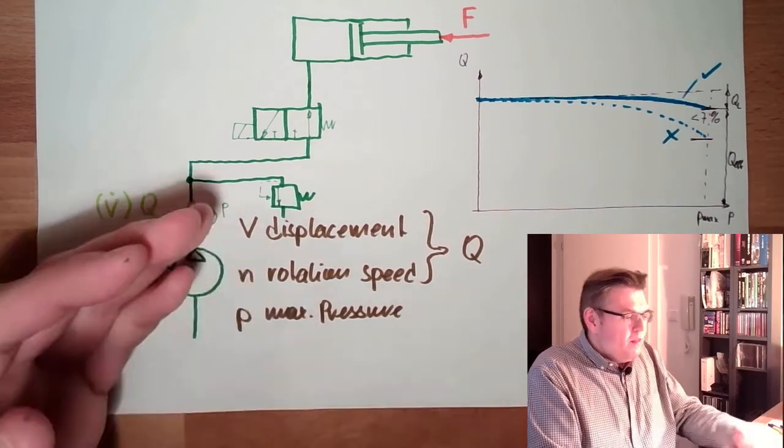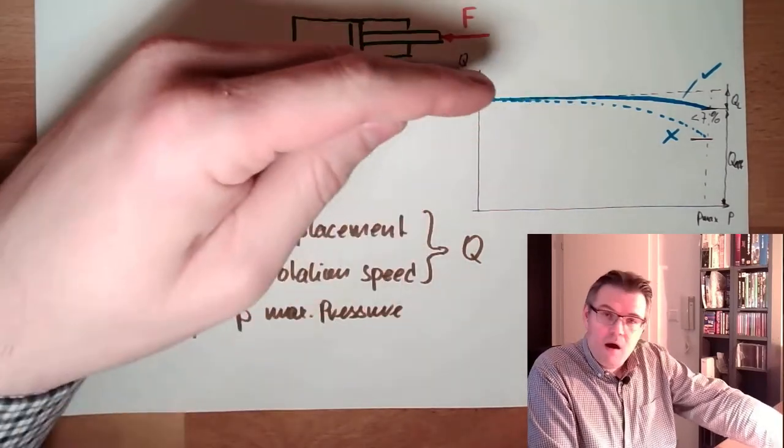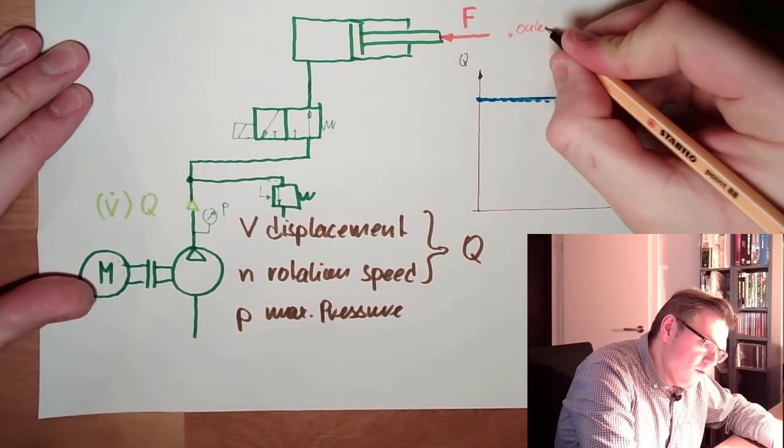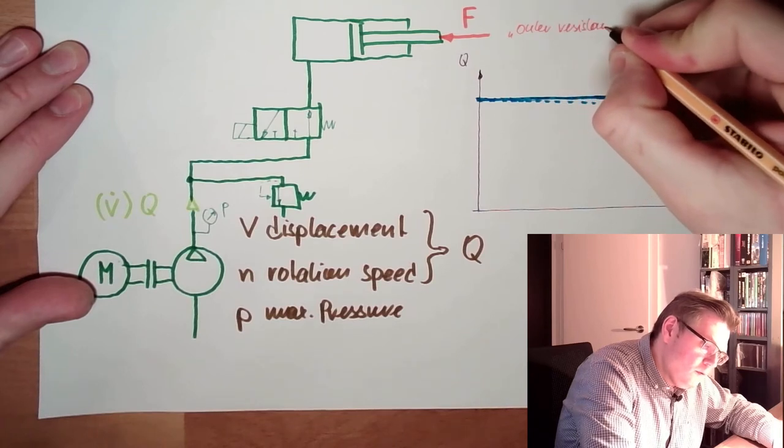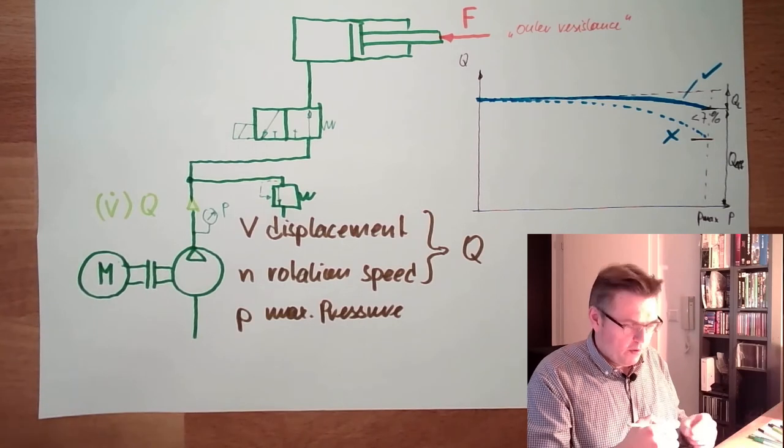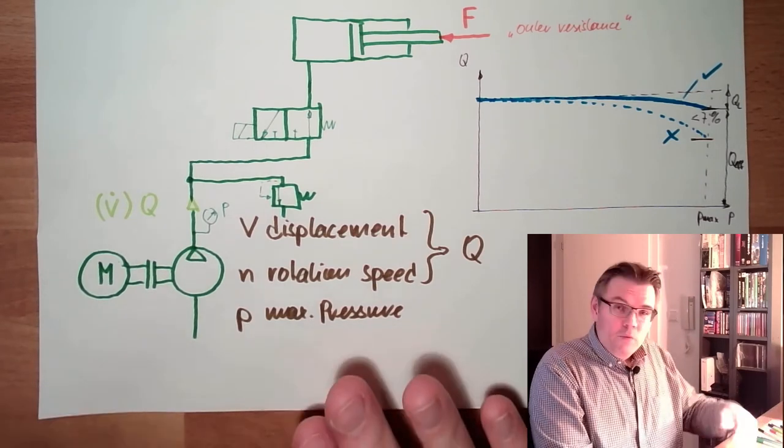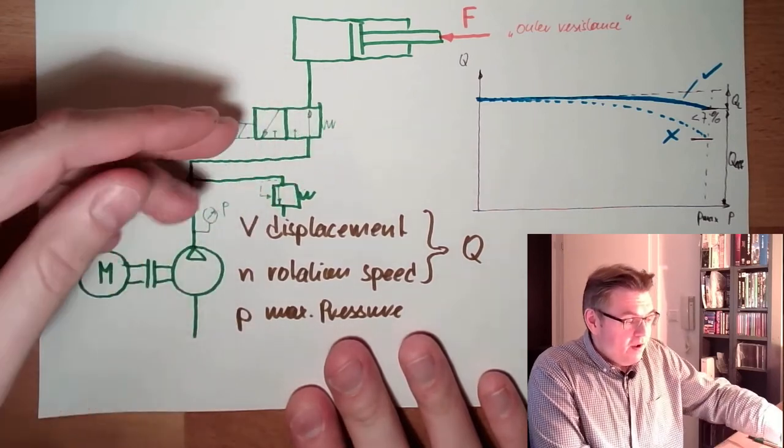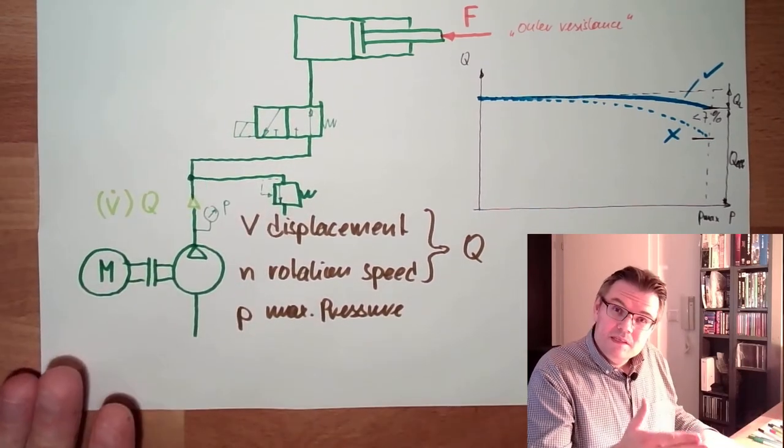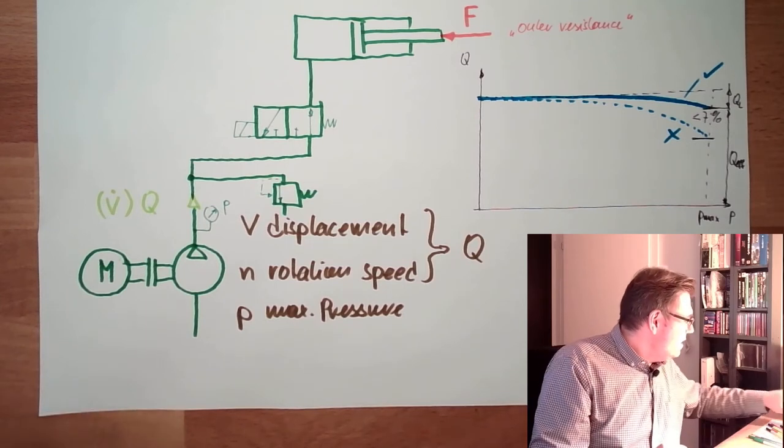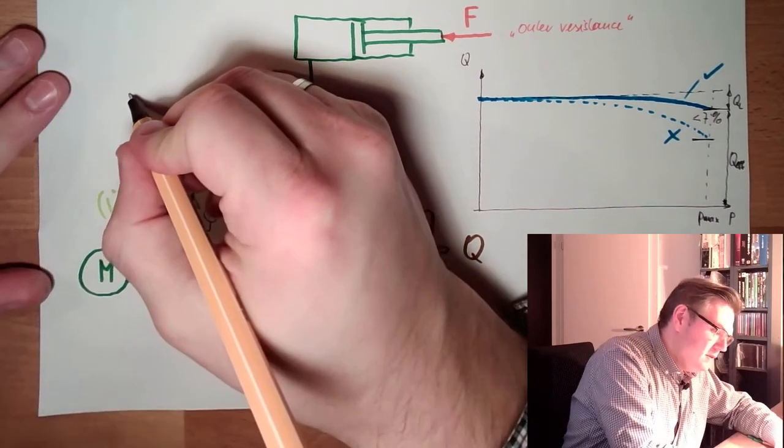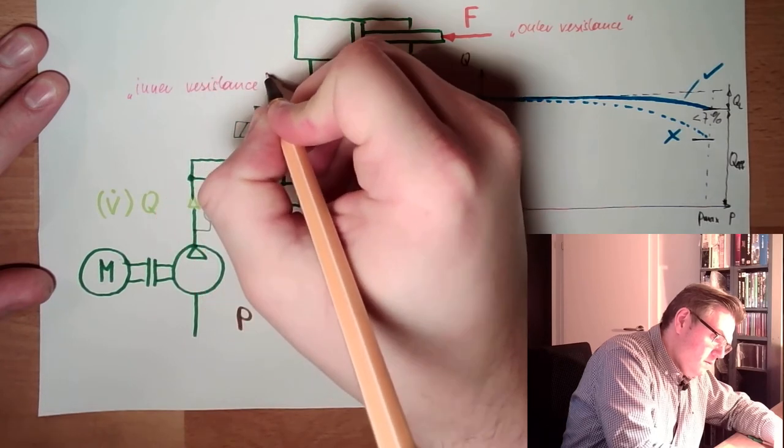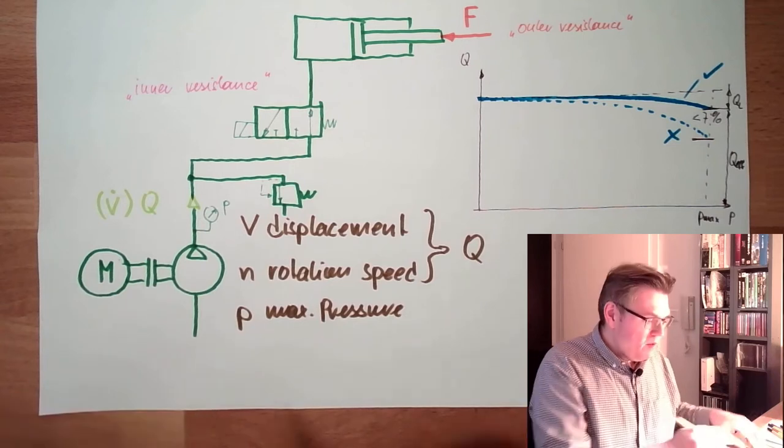So where is this pressure coming from? There is the outer resistance, which is coming from outer forces. This thing here, this is called outer resistance. This is simply the thing I want to overcome. And then we talked about flow losses and so on. There is a pipe in between, and there is streaming and so on. And there are valves, they are all resistance, flow resistance. These are called the inner resistance. And both in combination will determine how much pressure there is.